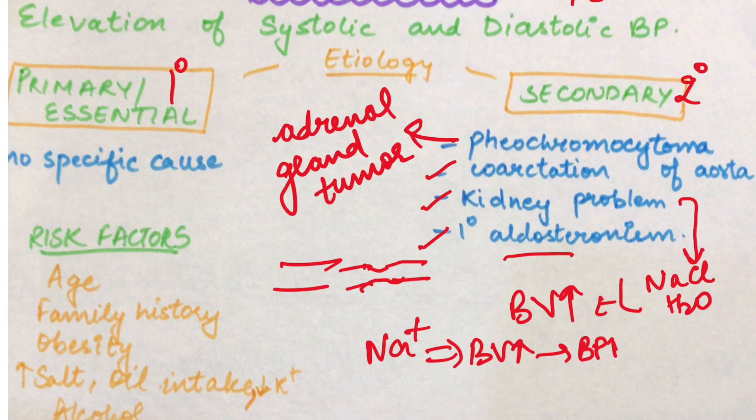Most of the times hypertension ke symptoms nahi hote — ye asymptomatic hote hai. Diagnose kaise karte hai? Jab hum BP measure karte hai. Hypertension asymptomatic hota hai until koi end organ damage ho jaye; usse pehle pata nahi lagta.